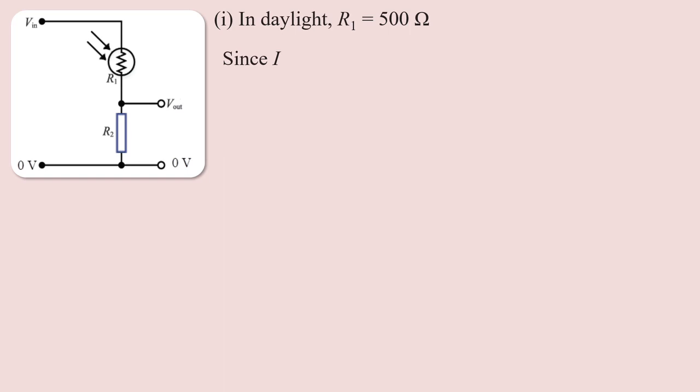The current I is equal to Vin divided by R1 plus R2. This is the formula used for the series resistor circuit to find the current, and from that the voltage across R2 can be calculated.